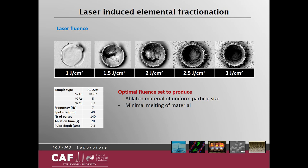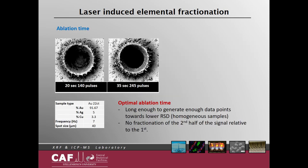The sample material determines the optimal fluence for uniform particle size and minimal melting of the sample. When looking at ablation of high-purity material, very low fluence resulted in a lot of melting but little material was vaporized for transfer to the ICP, while 2.5 to 3 joules per square centimeter fluence proved to be more optimal. The ablation time should be set long enough to generate sufficient data points — ideally at least 20 seconds when measuring many analytes. If it is too long, the laser crater gets very deep, like in a 35-second ablation, and the ablated material has difficulty being transported out of the crater.